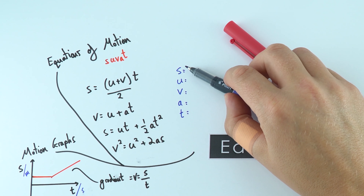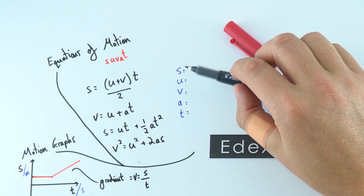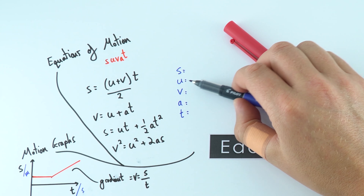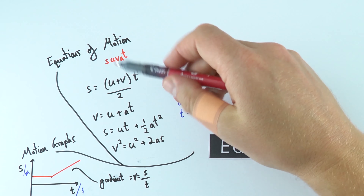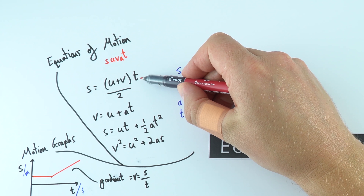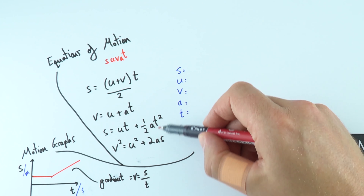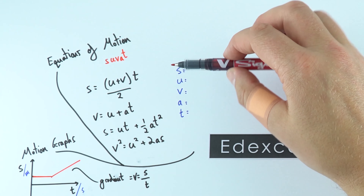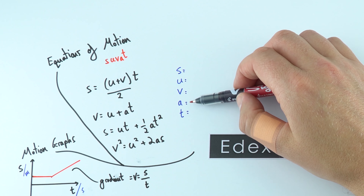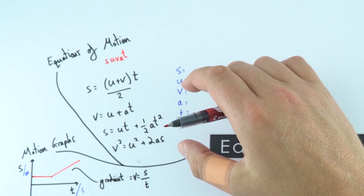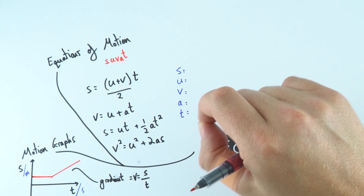I recommend writing SUVAT vertically down when approaching any question. You can then identify the quantities named in the question and identify what you're trying to find. You'll notice that one equation doesn't have an acceleration term, one doesn't have displacement, one doesn't have final velocity, and one doesn't have time. Provided you know three of these quantities, you can work out the fourth, and once you know four, you can find the fifth. These equations are extremely useful and appear throughout A-level physics.